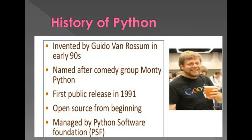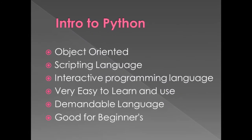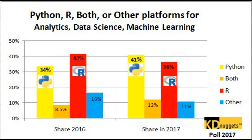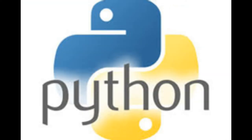Python is open source since its beginning and is managed by the Python Software Foundation, that is PSF. Python is a scripting language and also object-oriented. It is an interactive programming language which is very easy to learn and use. It is the most in-demand language in the entire world and the best programming language for beginners.